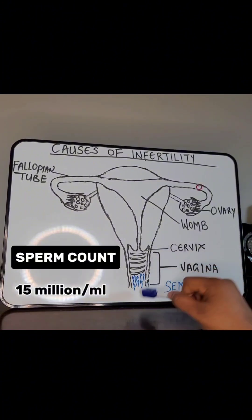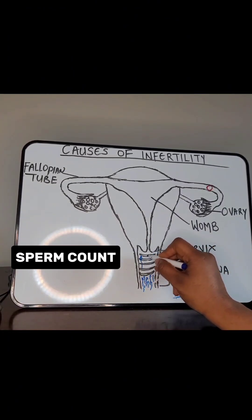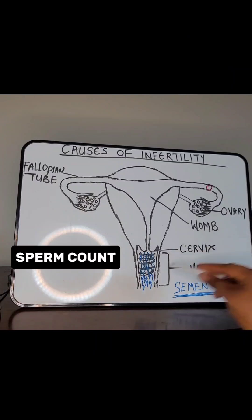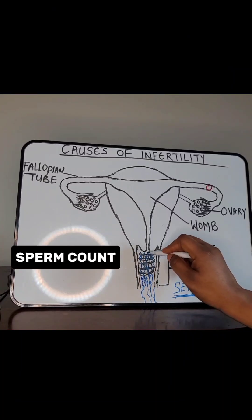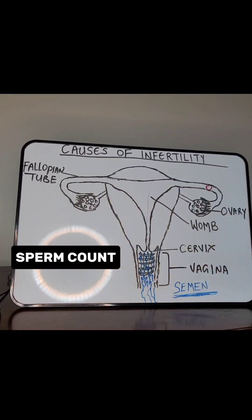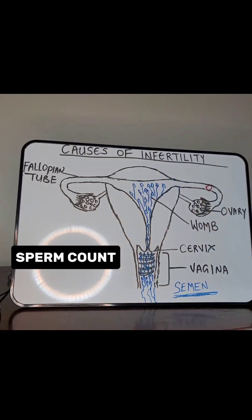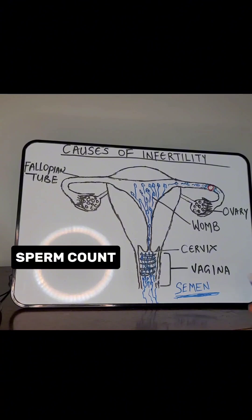If your sperm count is lower than 15 million per milliliter, you have low sperm count, which may be why your wife is not getting pregnant. You might wonder why you need millions when only one sperm cell fertilizes the egg. After millions are deposited in the vagina, thousands die because the vagina is acidic. More thousands flow out when your wife stands up. The rest try to enter the womb, but thousands get trapped in the cervical mucus. The ones that make it into the womb still have to undergo capacitation, and not all will complete this process.